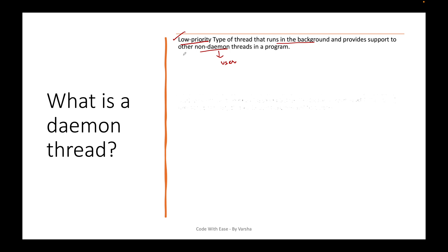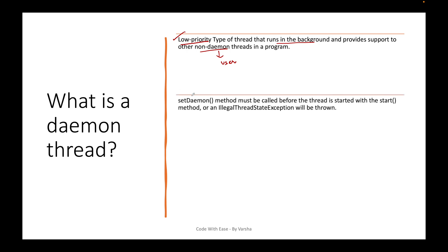There are a couple of characteristics of daemon threads. One important thing to remember, which we'll demo in the IDE, is that the setDaemon() method has to be called before we invoke the start() method. Otherwise, an IllegalThreadStateException will be thrown.